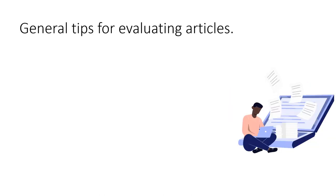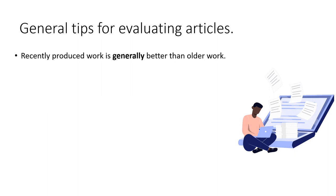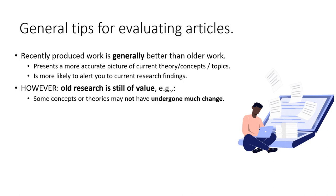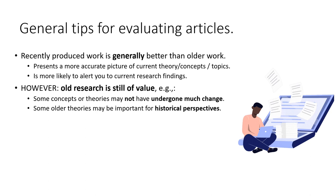We can also look at some general tips for evaluating research articles. Recent work tends to be better than older work, primarily because it presents a more accurate picture of current theory and concepts, and it is also more likely to alert you to current findings. However, old research is still of value. There may be some theories or concepts which have not really undergone many changes since their advent. You may also need a historical perspective on a particular theory — go back to when it was first proposed and map its way through. So old research is still useful as long as we identify whatever limitations it might have.